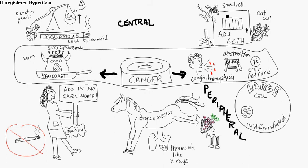Small cell carcinoma — it's associated with smoking. You get ectopic anti-diuretic hormone (ADH) and adrenocorticotropic hormone (ACTH) production, and there are oat cells. You get a decrease in sodium. You've got basophilic cells that are clumped in clusters. Small cell does respond well to chemotherapy.